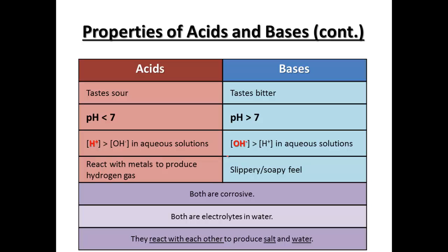Some properties of acids and bases. Acids taste sour. They have a pH of less than 7, so anywhere between 0 and 7. So the H+ concentration is much greater when it's in an aqueous solution. And they react with metals to produce hydrogen gas.